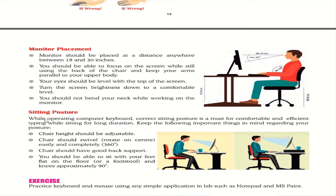For sitting posture: chair height should be adjustable and the chair should swivel and rotate 360 degrees easily. The chair should have good back support. You should sit with your feet flat on the floor and knees at approximately 90 degrees. Take breaks every 10 minutes — move your toes and fingers, stand up and sit down, or move your body briefly.